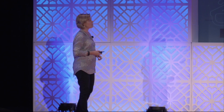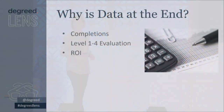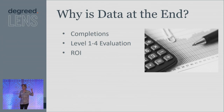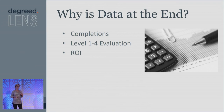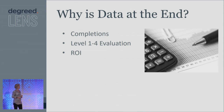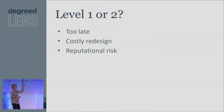But when we think of this diagnosis versus autopsy, let's look at some of the things that we actually autopsy on. We look at completions, we look at our level one to four evaluations, and then we hope that we've gotten some ROI that we're able to demonstrate. And when we do that, the problem is this is often much too late in the process. Your patient is dead and you're cutting them open and seeing what happened. The level one and two — again, it's too late. You've already put your course out there, or your learning asset.